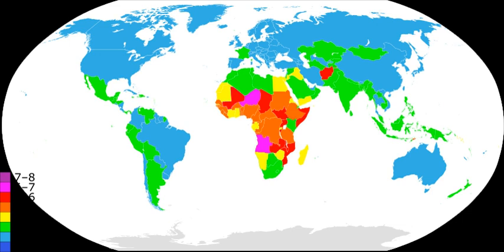Japan has experienced a shrinking population for many years. The government is trying to encourage women to have children or to have more children; many Japanese women do not have children, or even remain single. The population is culturally opposed to immigration.